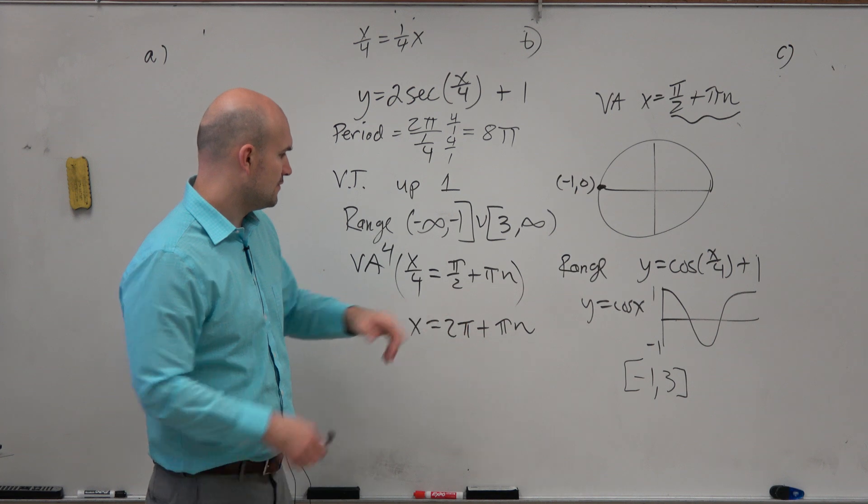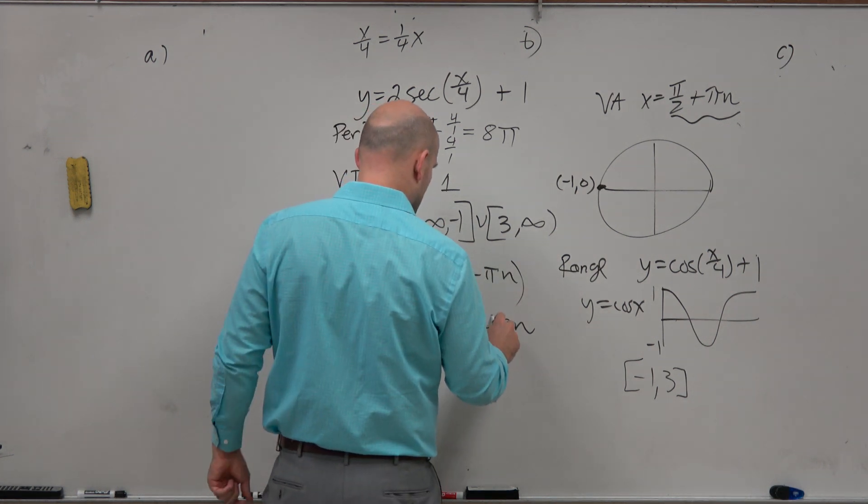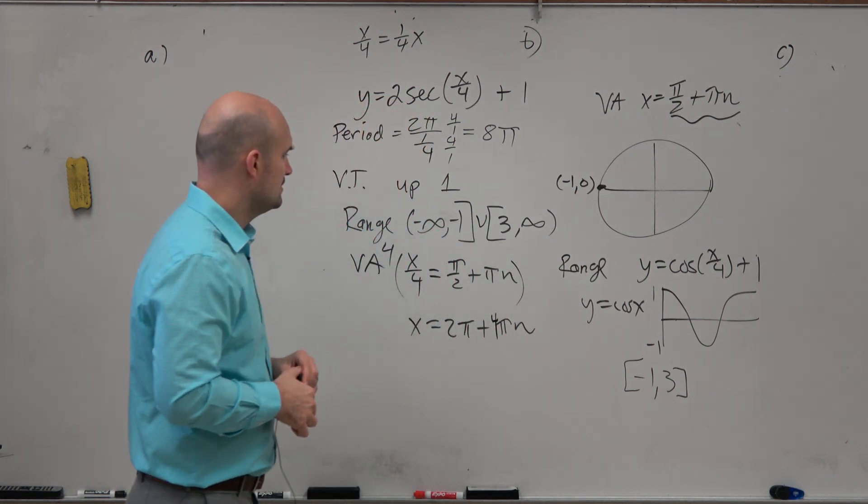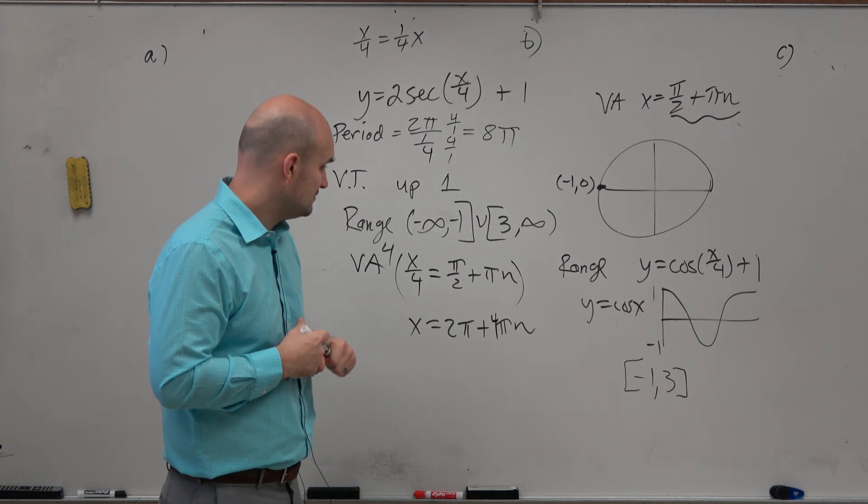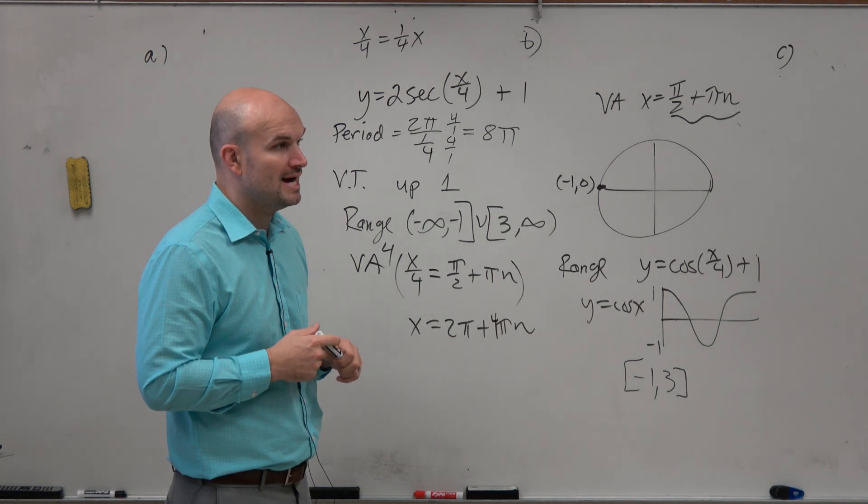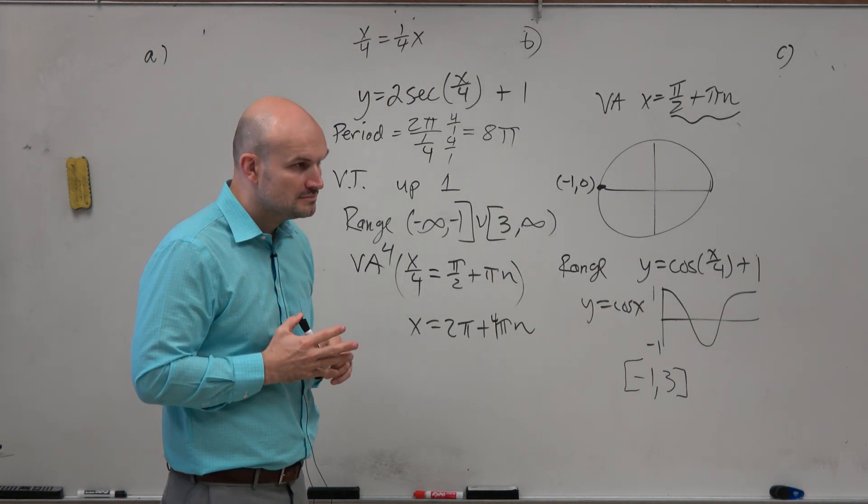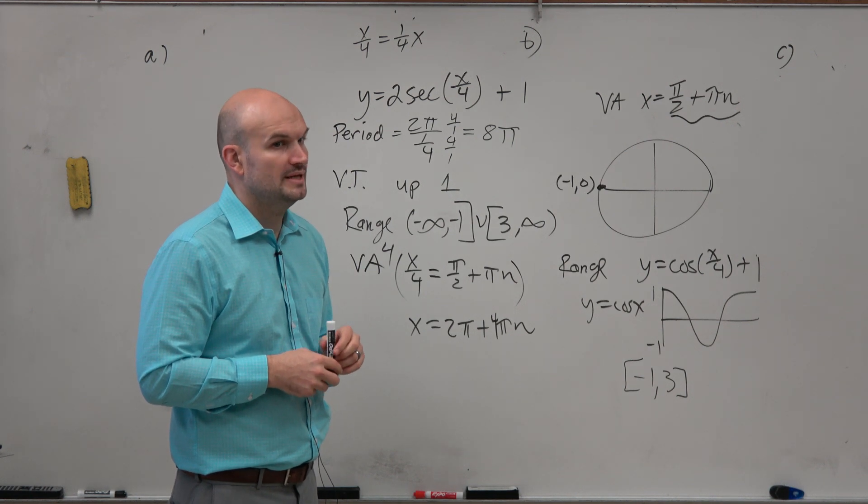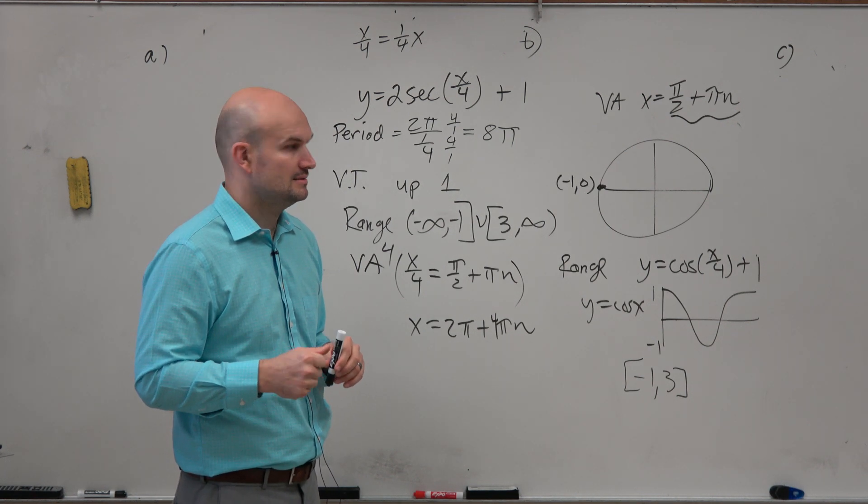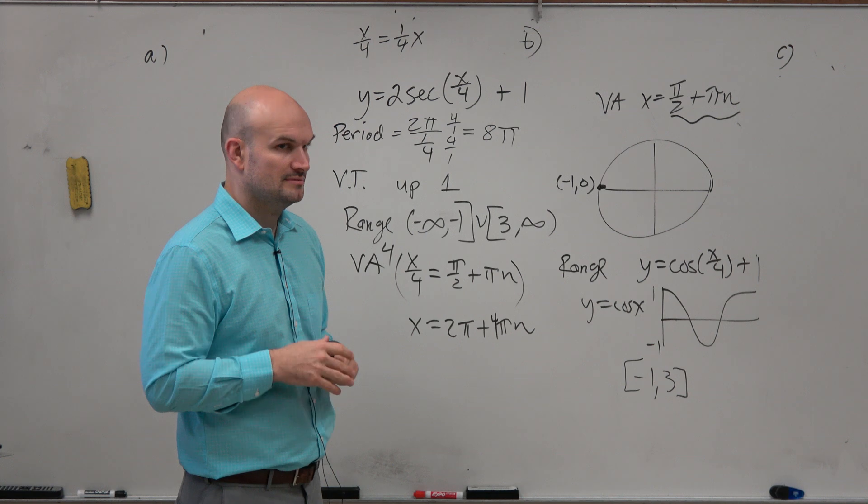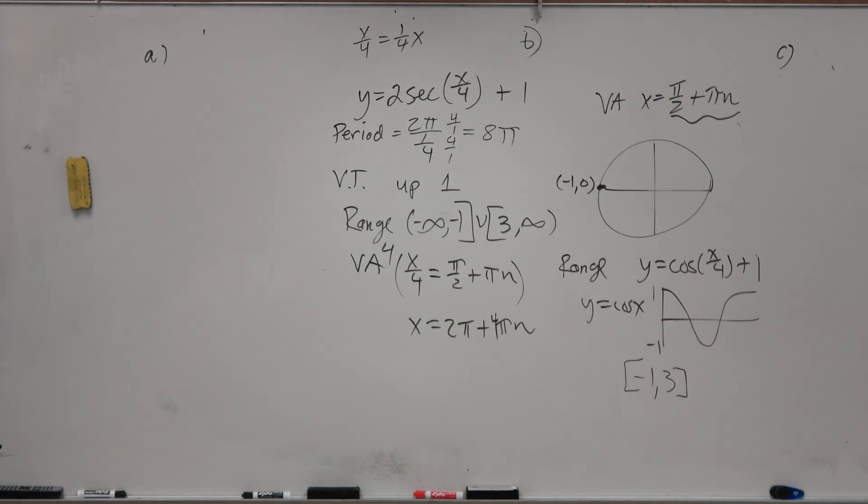And 4 times pi over 4. Oops, I'm sorry. That's 4 pi n, right? Didn't distribute all the way. So therefore, that's going to be 2 pi plus 2 pi plus 4 pi n. Yeah? Got it? No? Kind of? That's why we're going to do a lot of practice. Lucky you guys.